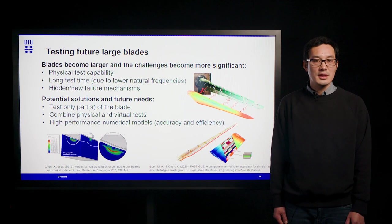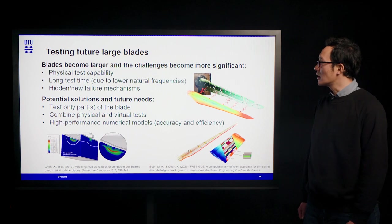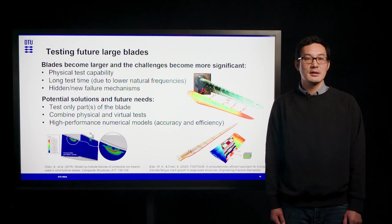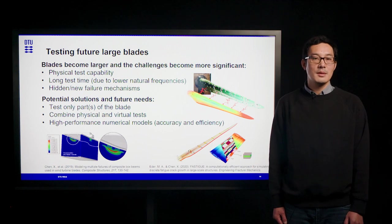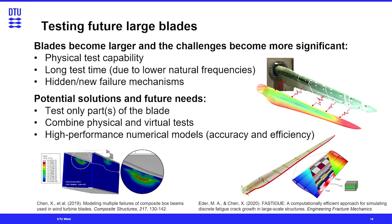There are some potential solutions and future directions for these challenges. We may test only part of the blades by using, for example, blade segmentation or subcomponent testing. We can also combine physical and virtual testing so that they complement each other to get an overview of what's going on with the blade. We also need high-performance numerical models that not only focus on modeling accuracy but also efficiency.